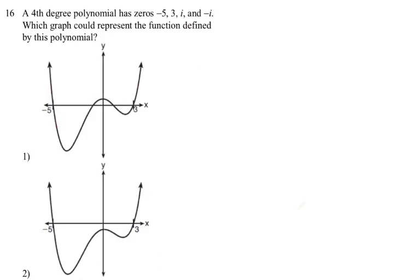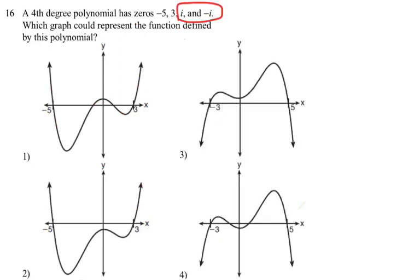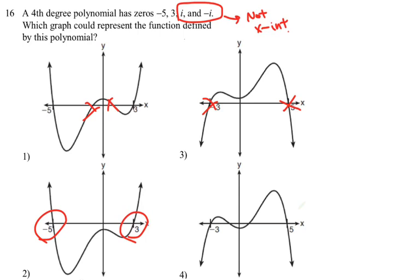Number sixteen: we have 4 roots, but i and negative i are imaginary, so those are not x-intercepts. The only x-intercepts are negative 5 and 3. That means choice 2 seems correct and is in fact the answer.